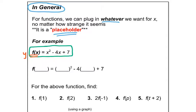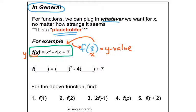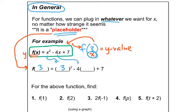For example, what would f of 3 be? Meaning when x is 3 and I plug x back into my function, what is the f value or y value when I plug in the x value of 3? Remember how I said it's like a placeholder — 3 goes in for all of the x's. So this would be f of 3 equals 3 squared minus 4 times 3 plus 7. Notice there's no 3 at the end because the 7 doesn't have an x attached, so it's just plus 7.